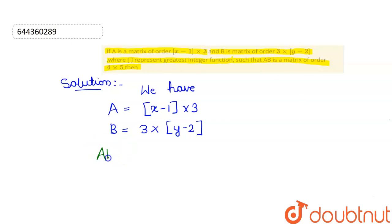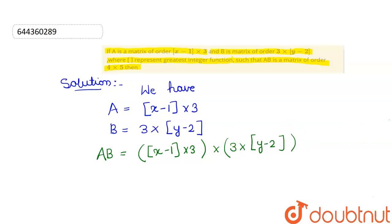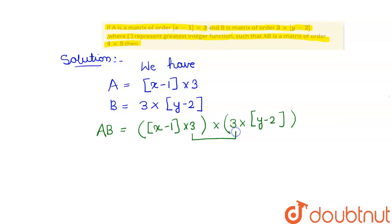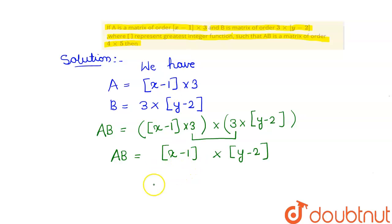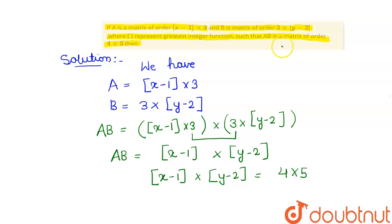First of all we find AB. AB equals to [x-1] into 3, into 3 into [y-2]. Here the rows and columns are equal, so it means AB equals to [x-1] into [y-2]. Comparing this, we know that [x-1] into [y-2] equals to 4 into 5, because AB is a matrix of order 4 into 5.